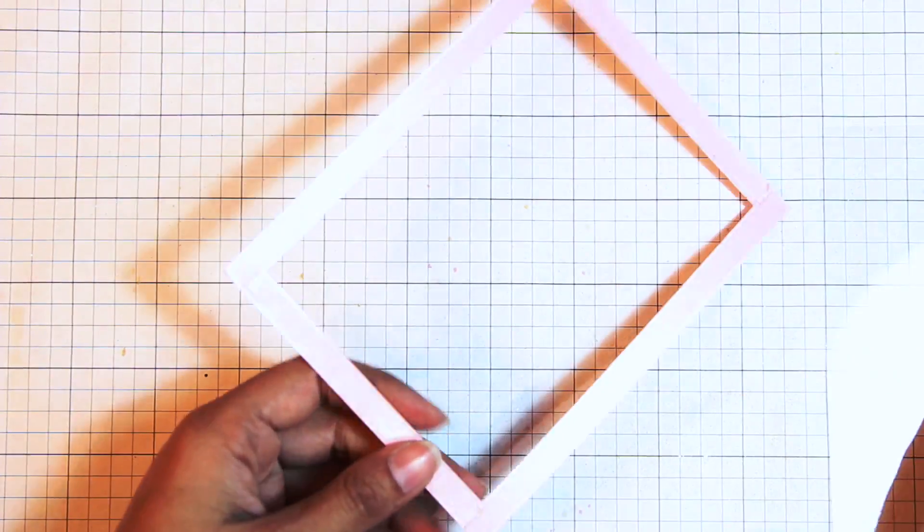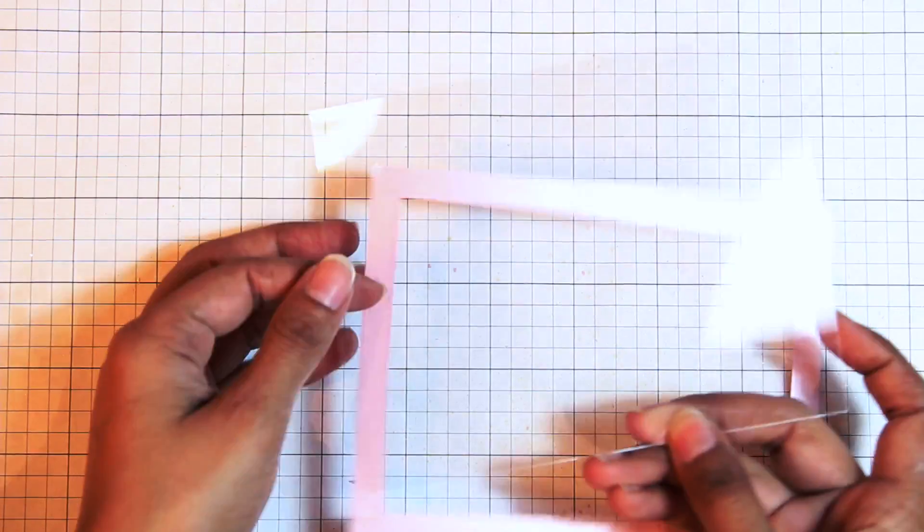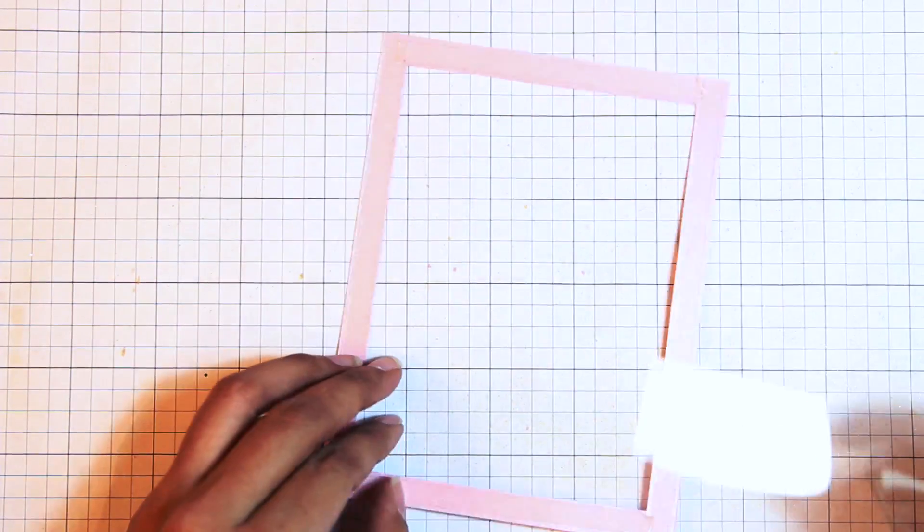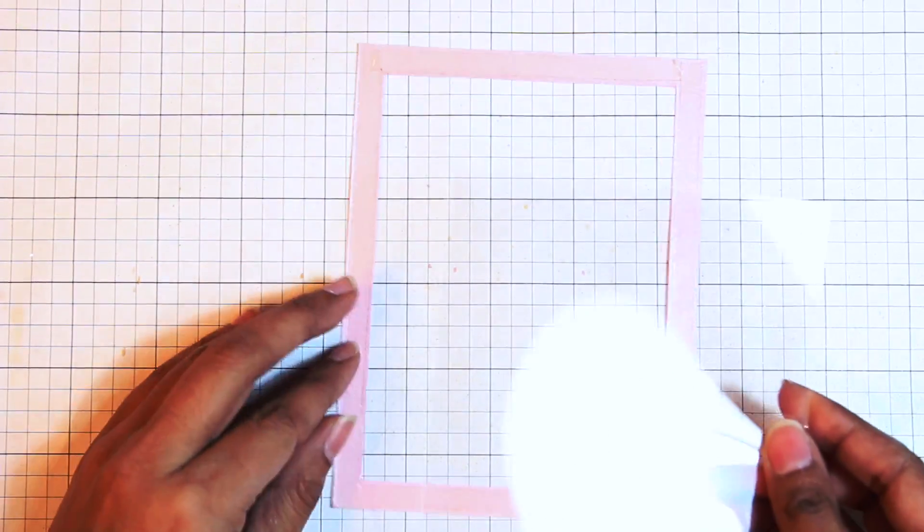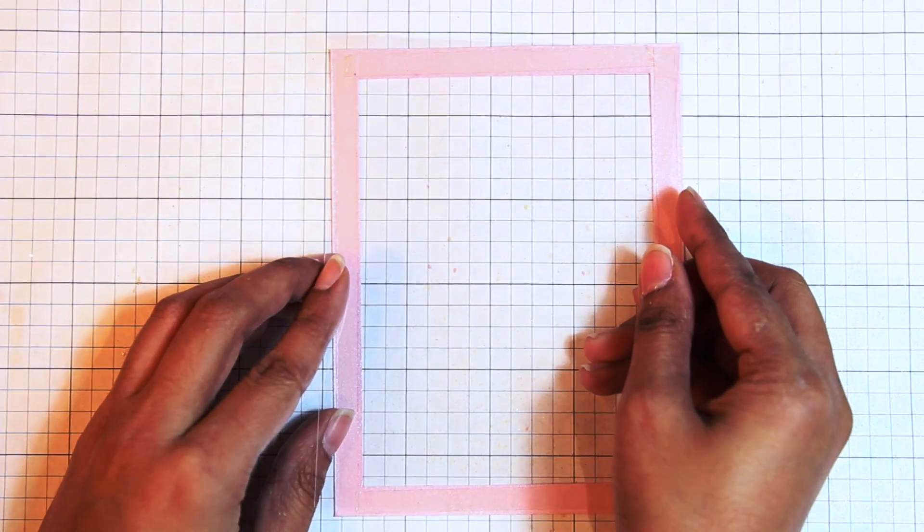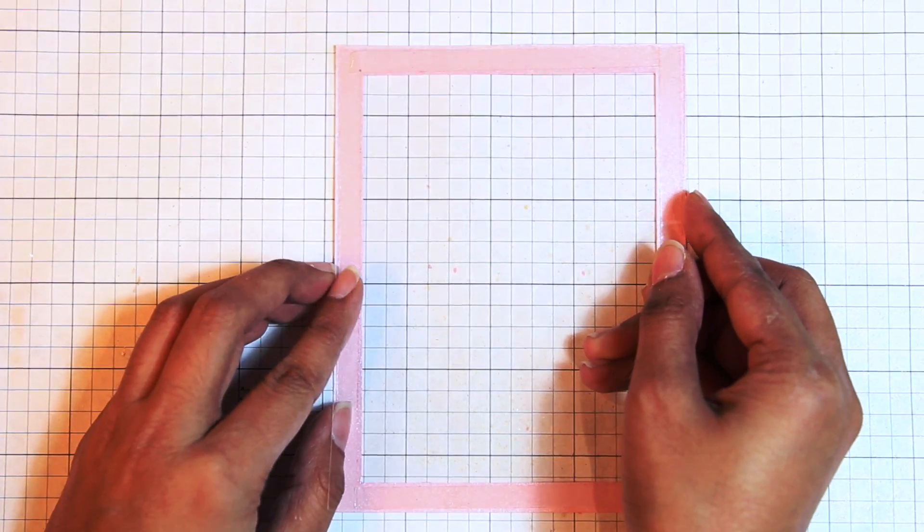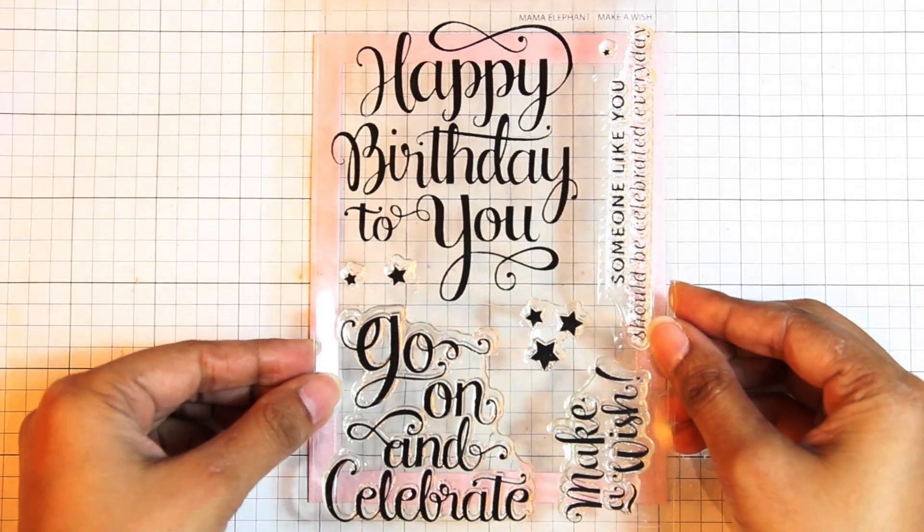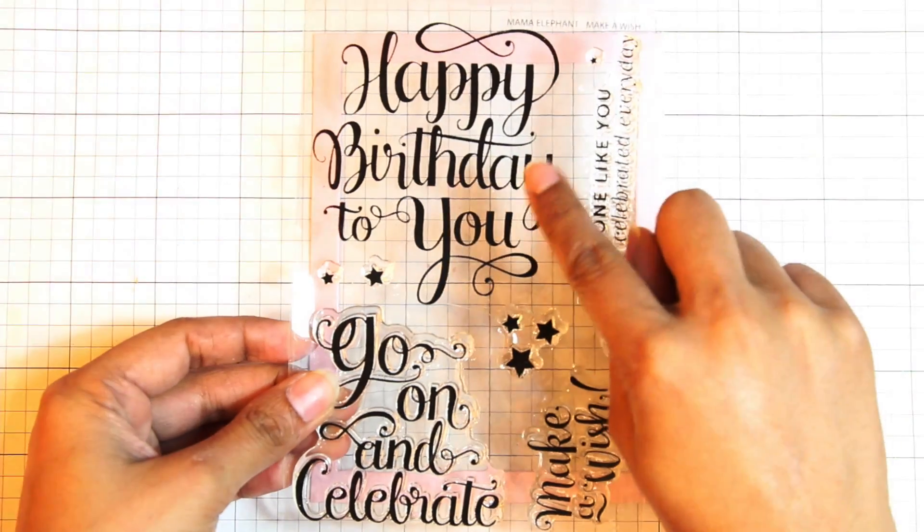With that backing paper removed, I can now adhere a piece of acetate to the back of the frame. I've cut this to the same size as the A2 card base, and I'm just going to adhere this on the back using that score tape to keep it in place. It's at this point that I remember that I actually wanted to do some stamping on top of the acetate before I adhered it, but never mind, we'll just carry on as is.